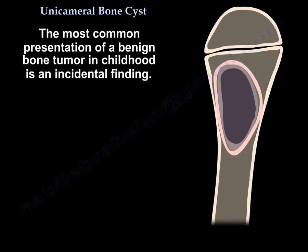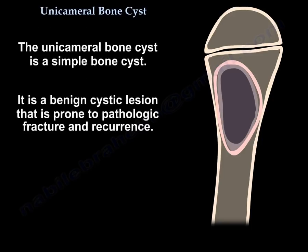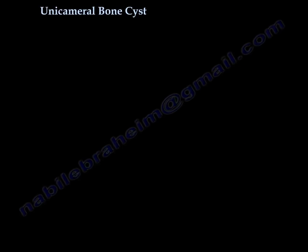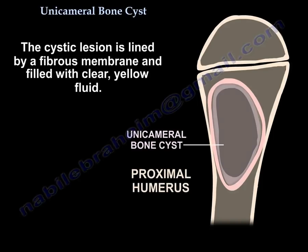The most common presentation of a benign bone tumor in childhood is an incidental finding. The unicameral bone cyst is a simple bone cyst — a benign cystic lesion prone to pathologic fracture and recurrence. Approximately 85% of patients are under the age of 20. The lesions tend to occur in the metaphysis and diaphysis, abutting the epiphysis in the proximal humerus and proximal femur. The cystic lesion is lined by a fibrous membrane and filled with clear yellow fluid.